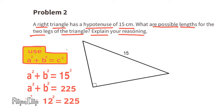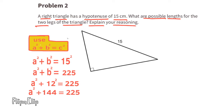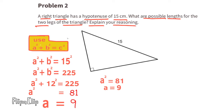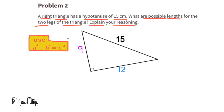If b squared were 12 squared, then the equation would be a squared plus 12 squared equals 225. Since 12 squared is 144, subtracting 144 from 225 gives a squared equals 81. Since the square root of 81 is 9, side length a is 9 centimeters. For this right triangle with a hypotenuse of 15 centimeters, the legs could be 9 centimeters and 12 centimeters.